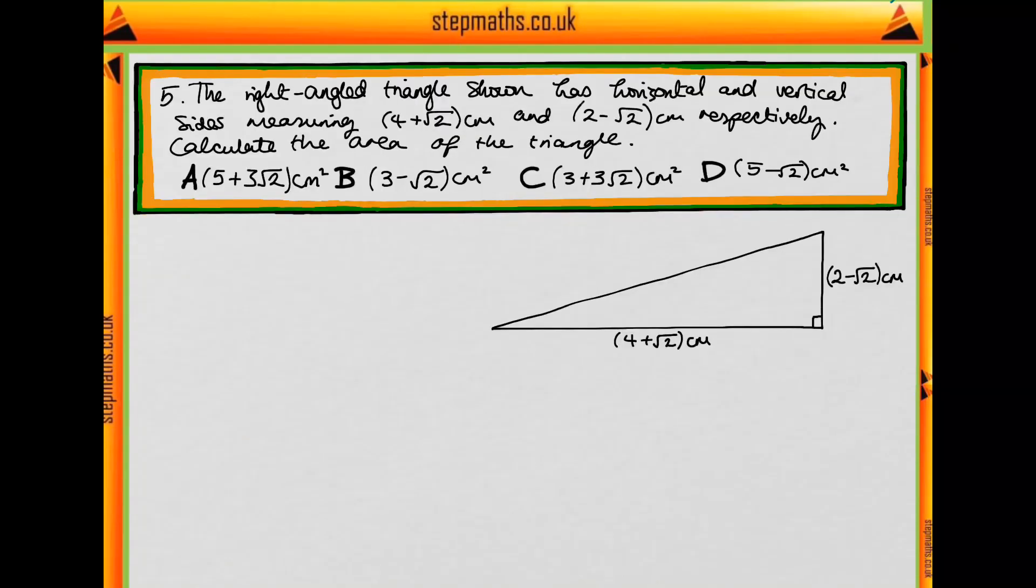This is question 5 of the Natural Science Admissions Assessment specimen paper. In this question we have a right-angled triangle which we're given a picture of here, and it has horizontal and vertical sides which are 4 plus root 2 and 2 minus root 2, and we want to find the area of this triangle.